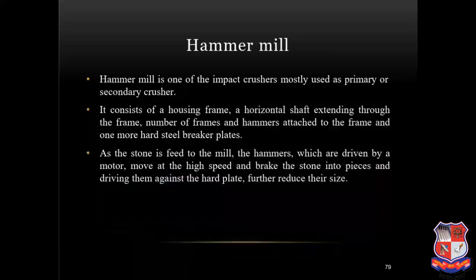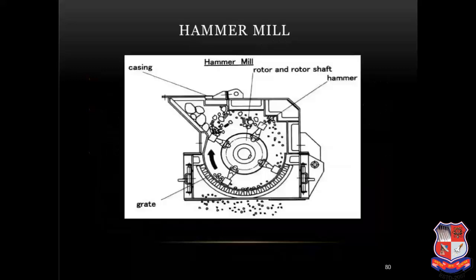Hammer mill is one of the impact crushers, mostly used as a primary or secondary crusher. It consists of a housing frame, a horizontal shaft extending through the frame, a number of frames and hammers attached to the frame, and hard steel breaker plates. As the stone is fed to the mill, the hammers — driven by a motor — move at high speed and break the stone into pieces; driving them against the hard plate further reduces their size.